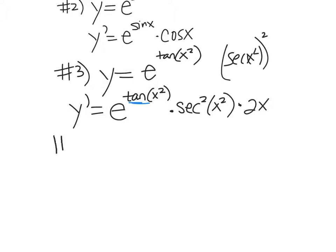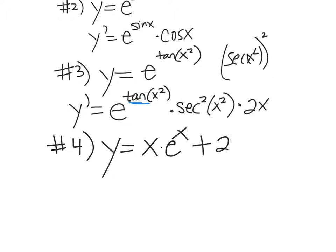Number four: y equals x times e to the x plus 2x squared.